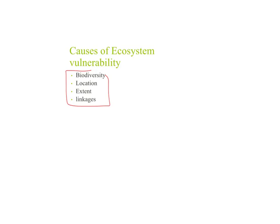For extent or size, generally the greater the size, the less vulnerable the ecosystem. Ecosystems that are restricted and relatively small can be potentially more vulnerable. An ecosystem's proximity to stress will impact its vulnerability — factors such as latitude, altitude, and distance from the sea will impact its climate and therefore its vulnerability. Linkages refer to how interdependent an ecosystem is on other factors outside of its control.